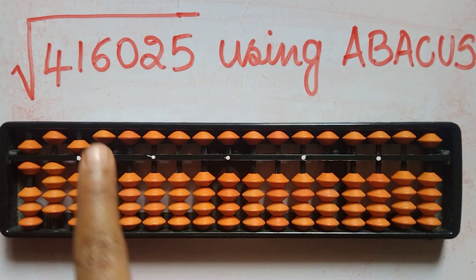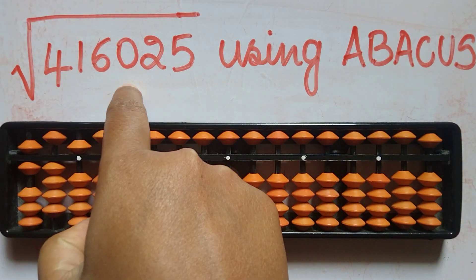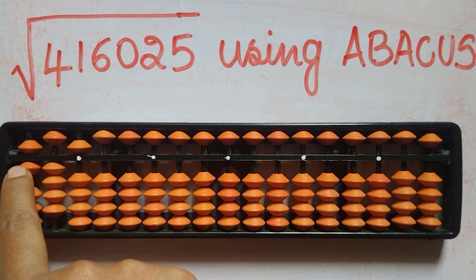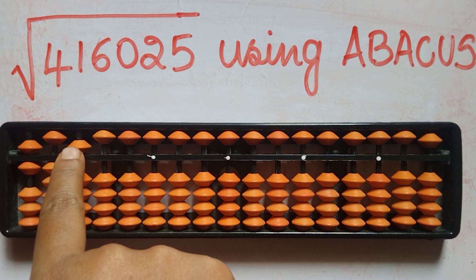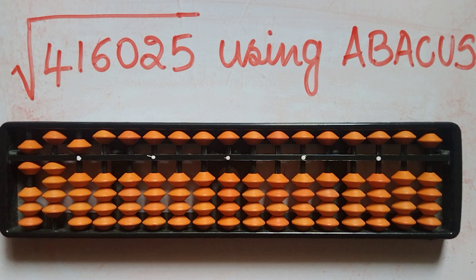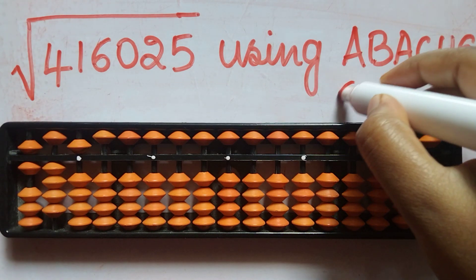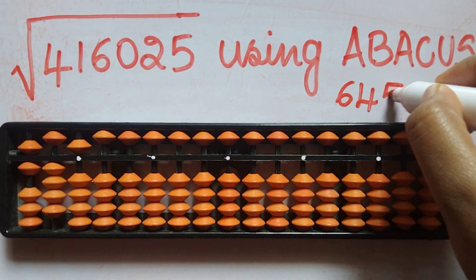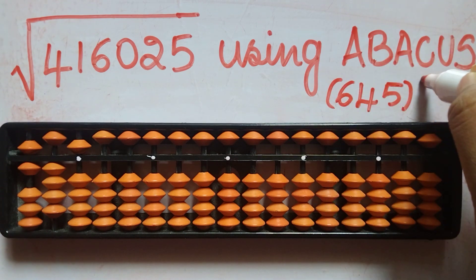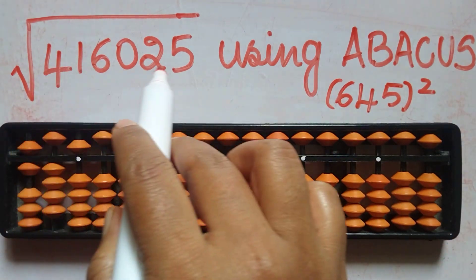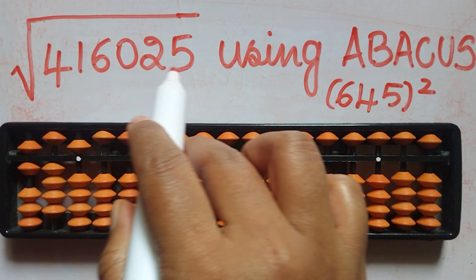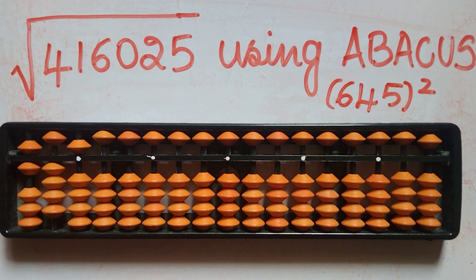When the abacus tool is completely cleared, that means it is a perfect square number. The answer is 645 — meaning when you square 645 you get 4,16,025. I hope this video was helpful. For more videos please subscribe. Thank you.